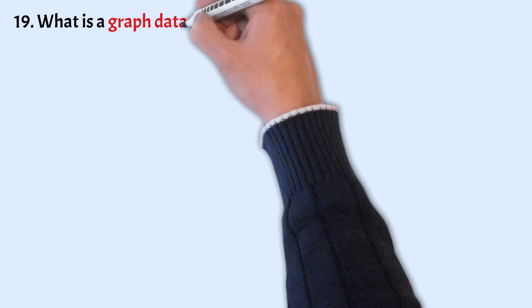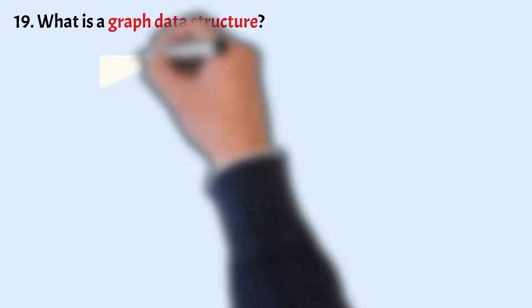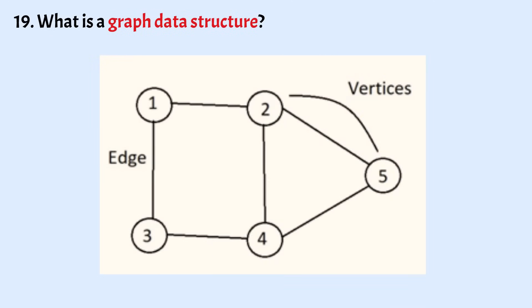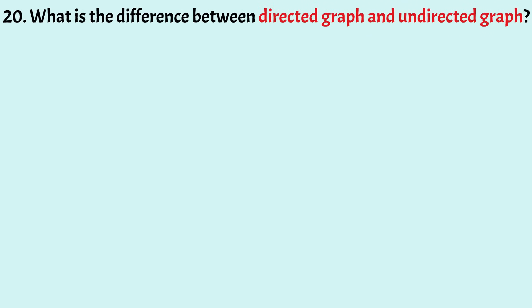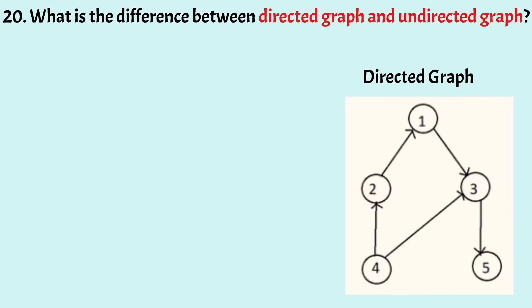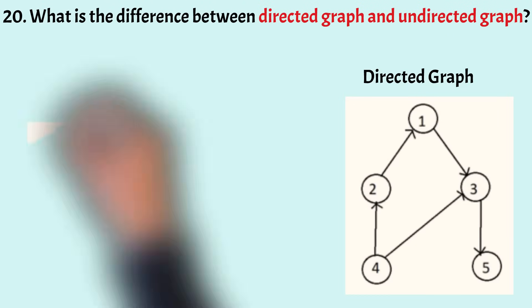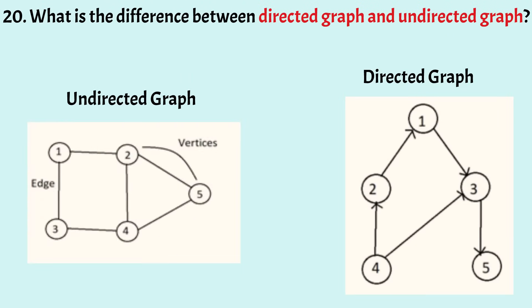What is a graph data structure? A graph is a non-linear data structure consisting of vertices and edges that connect the vertices, where the set of edges describes the relationship between the vertices. What is the difference between a directed graph and an undirected graph? In a directed graph, the edges that connect the vertices have a direction, representing the direction in which the graph can be traversed. In an undirected graph, the edges don't have any direction and can be traversed bi-directionally.